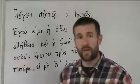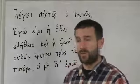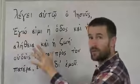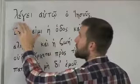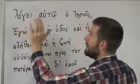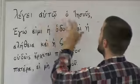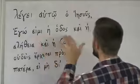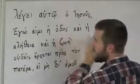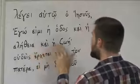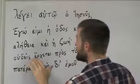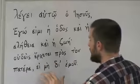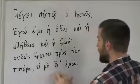Hopefully you already watched the video on John 1:1 and have it memorized. Let's go through this word by word. The first word: legei autō ho Iēsous, egō eimi hē hodos, kai hē alētheia, kai hē zōē, oudeis erchetai pros ton patera, ei mē di' emou.